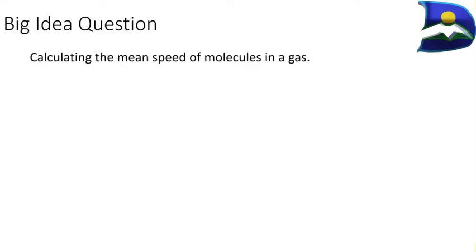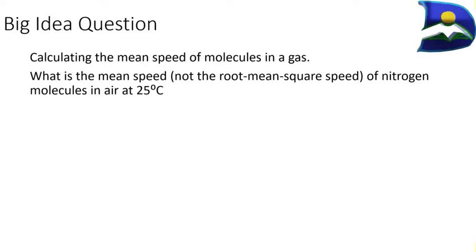The big question in this video is to calculate the mean speed of molecules — pretty much gases. Specifically, what is the mean speed — not the root mean squared speed — of nitrogen molecules in air at 25 degrees Celsius? The first step is focusing on what mean speed actually means.